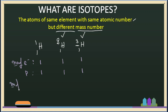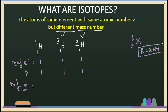Let us calculate the number of neutrons. We know that mass number A is equal to atomic number Z plus number of neutrons N. So, number of neutrons equals mass number minus atomic number. For H-1: atomic number is 1, mass number is 1, so the number of neutrons is 0.